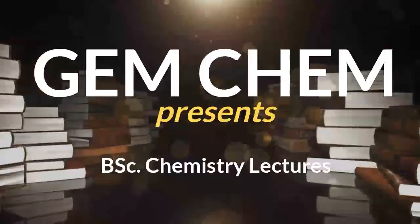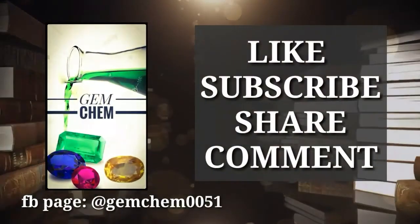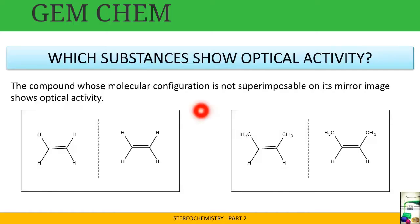Now, which substances show optical activity? In the previous video we dealt with optical activity and what optically active substances are. Those substances whose molecular configuration is not superimposable on its mirror image are optically active. The compound whose molecular configuration is not superimposable on its mirror image shows optical activity, and the one whose mirror image is superimposable does not show any optical activity.